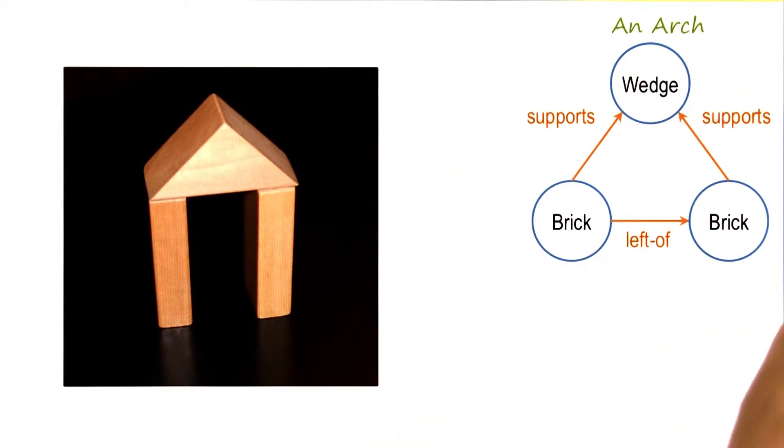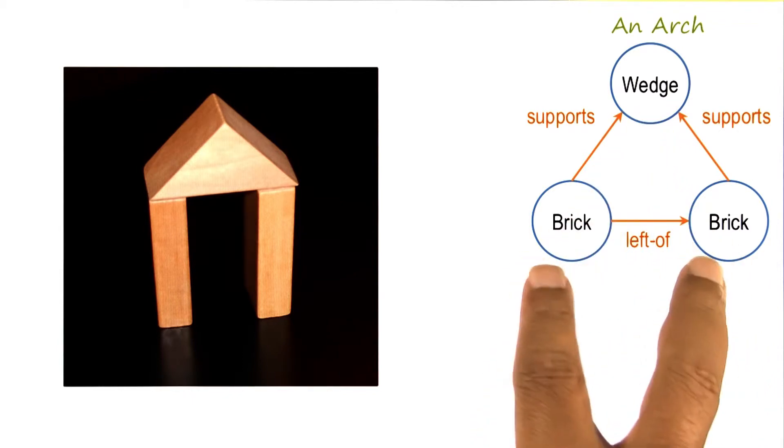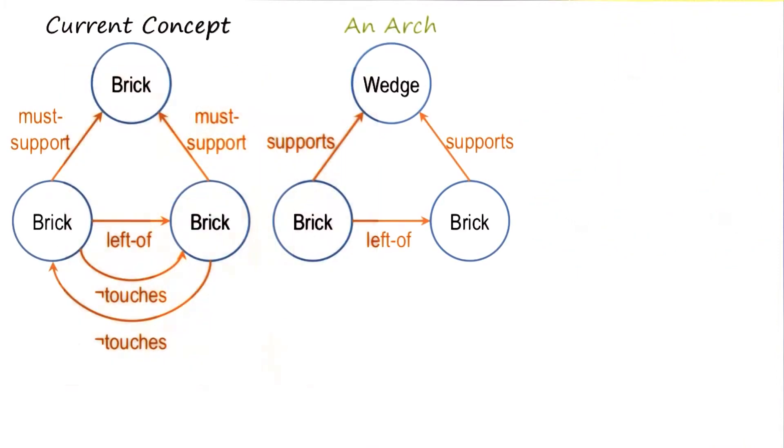So the AI program may have this as the input representation. There are two bricks, this brick is left of the other brick. There's a wedge on top, the two bricks are supporting the wedge. So now the AI program has this as the current definition.